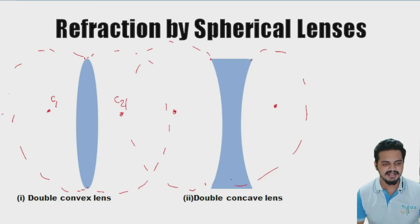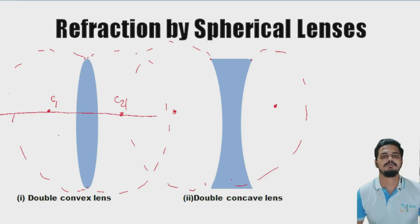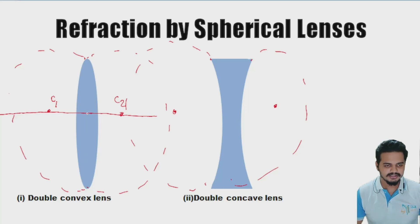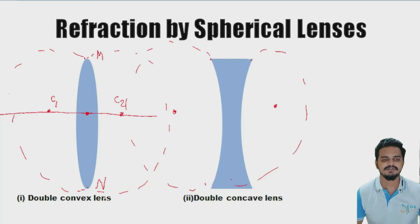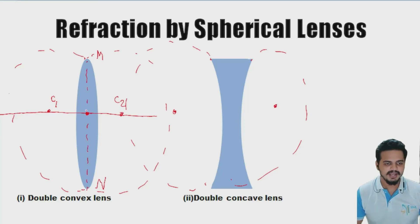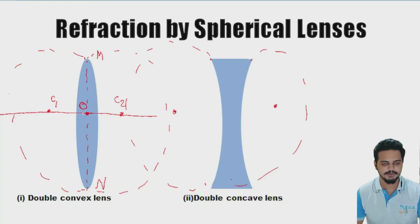An imaginary straight line passing through both centers of curvature is called the principal axis. The center of the lens, which is equidistant from points M and N — the ends of the lens — is called the optical center, labeled O. A clearer diagram will be shown in the next part of the video.